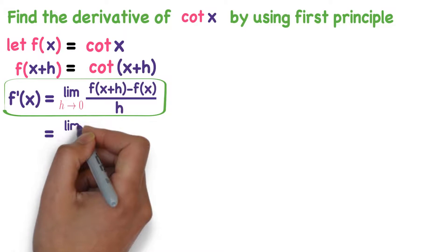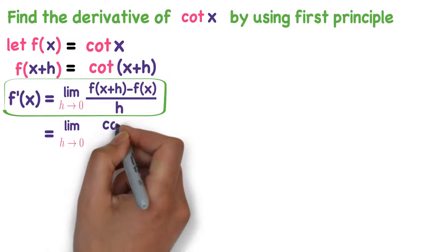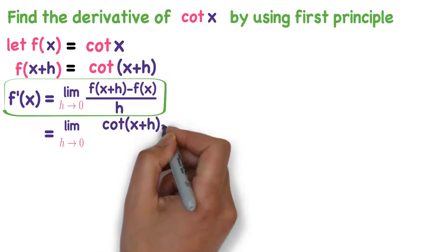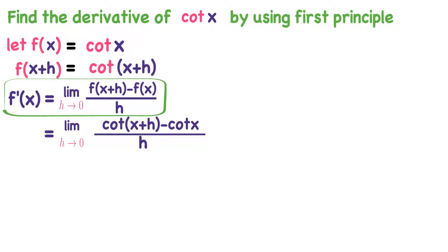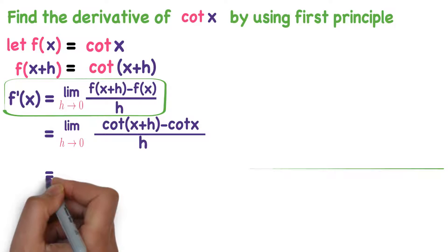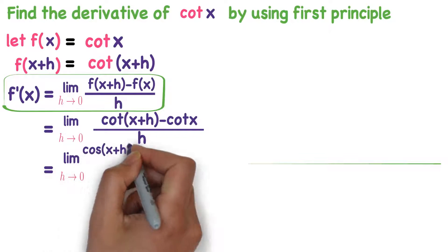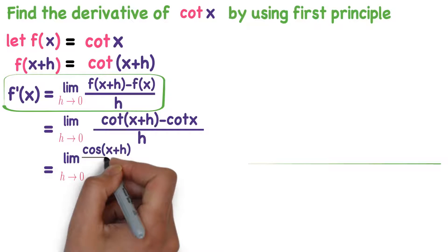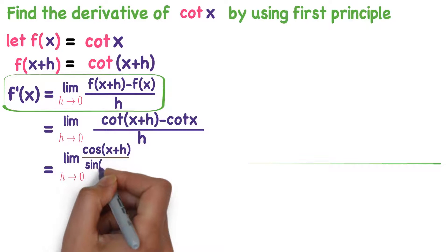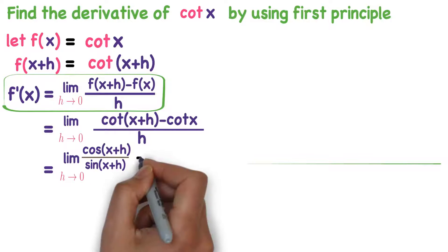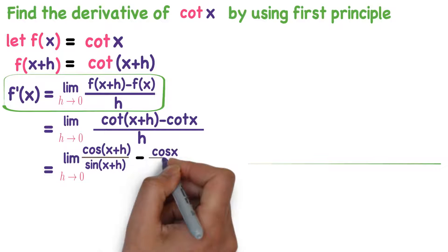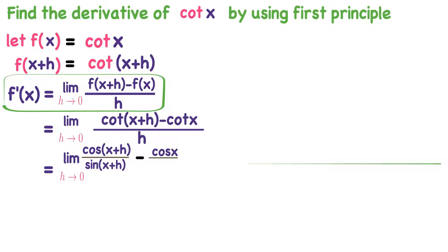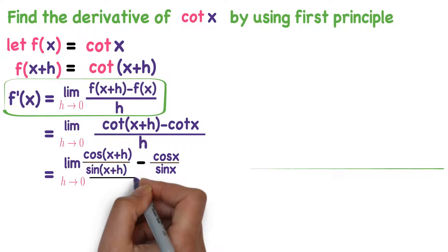Now substitute these two things into the formula. F of x plus h is cot of x plus h, minus f of x which is cot x, whole divided by h. We know the formula that cot x is cos x by sin x. So cot of x plus h equals cos of x plus h divided by sin of x plus h, and cot x equals cos x divided by sin x. Whole divided by h.